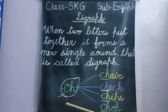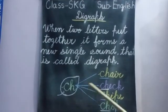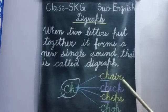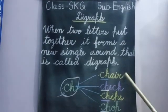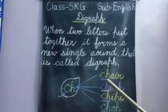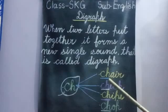For example: c-h-a-i-r, chair. The digraph is ch.